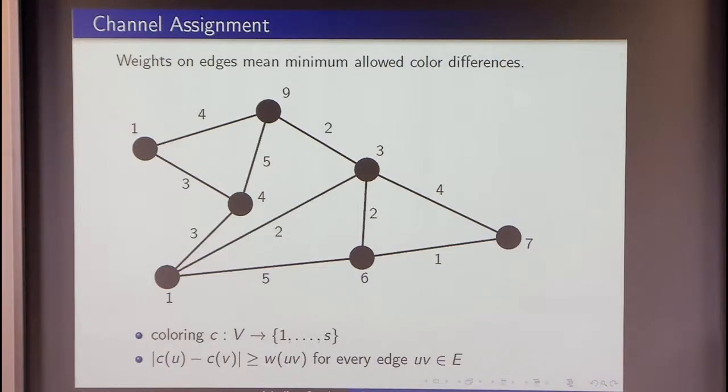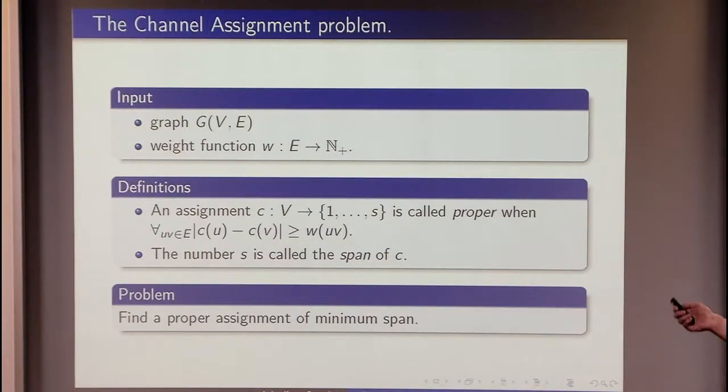The formal definition is that we have a graph, we have a weight function, and we are looking for a proper assignment that is an assignment that satisfies all the constraints of the edges and also has a minimum span of colors. Note that we can have gaps, but the total span needs to be as small as possible.